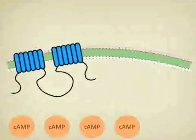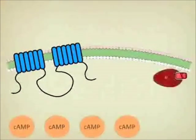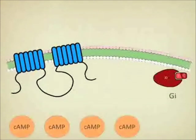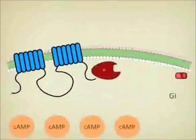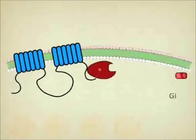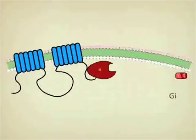On the other hand, we have protein Gi, which is inhibitory — the contrary of the stimulatory Gs. It will inhibit the process of producing cyclic AMP, so there will be less quantity of intracellular cyclic AMP.